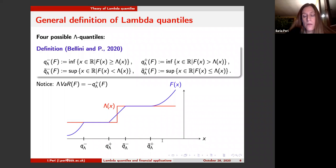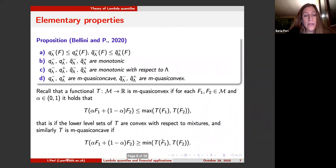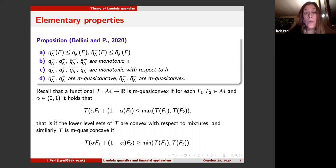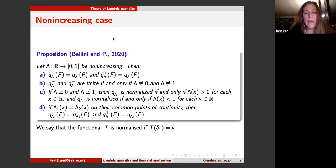The general basic properties without any additional condition on the lambda function are monotonicity, and quasi-convexity or quasi-concavity with respect to distributions. We also have an additional property: monotonicity with respect to the lambda function, in a sort of symmetry with the monotonicity with respect to the distribution function. In this paper, however, we focus more on the non-increasing case of lambda quantiles.